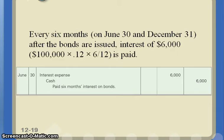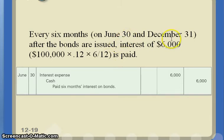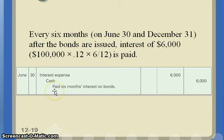When paying out interest, the calculation is always the same: principal ($100,000) times the interest rate, times time. Interest is always stated as an annual figure, and since it's paid every six months, we use 6/12. Running this calculation gives us $6,000. So every June 30th and every December 31st, the journal entry is a debit to interest expense and a credit to cash for $6,000. This same entry is repeated every June 30th and December 31st until the bond matures.